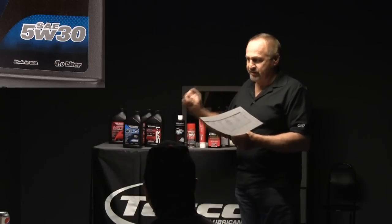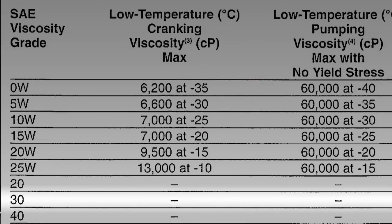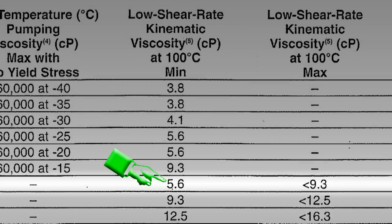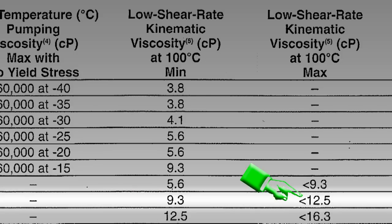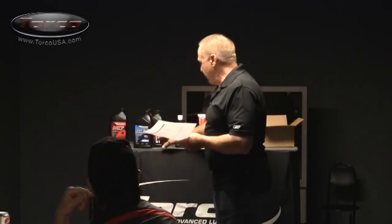At Torco, we can make a batch and target our viscosity for that particular bottle of oil. Our 5w30, for example, targets about 12 centistokes. Here's the range: for a 20-weight it's 5.6 to 9.3; then 9.3 to 12.5; 12.5 to 16.3; and so on. This means if you made an oil that came out at, say, 5.8 or 5.9 and bottled it, it's fully compliant — it is a 20-weight oil.